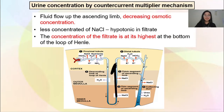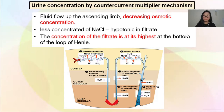As the fluid flows up the ascending limb, there will be decreasing osmotic concentration. Bila dia menaik, cecair yang di dalam akan menjadi less concentrated — it becomes hypotonic. In the filtrate, the concentration is at its highest at the bottom of the loop of Henle. Bila dia di bawah loop of Henle, masa itulah filtrate ini paling pekat — most concentrated.